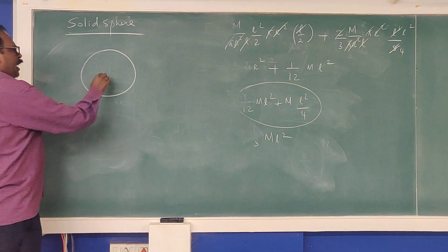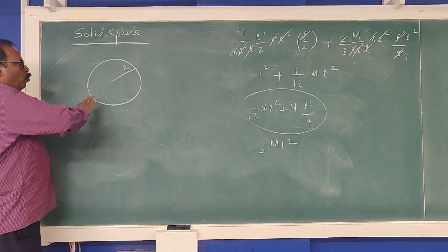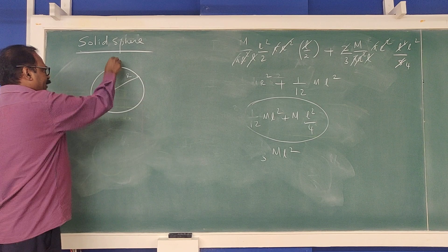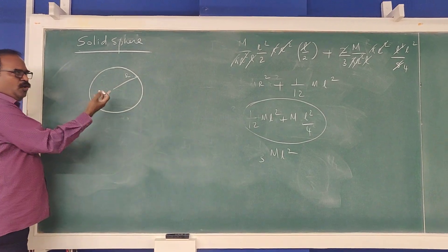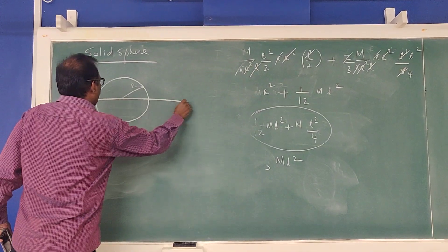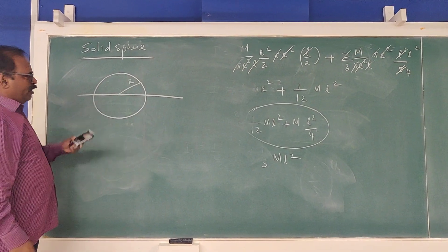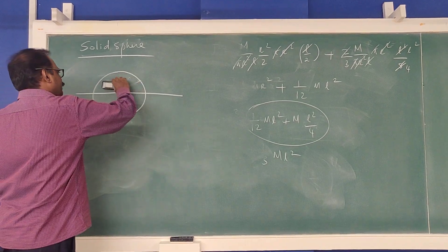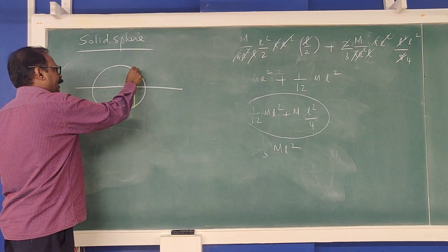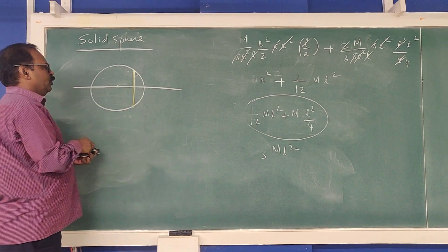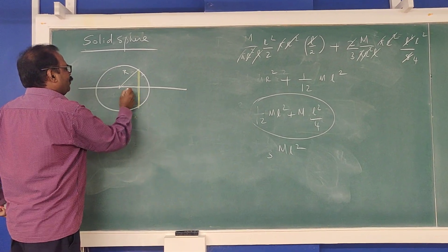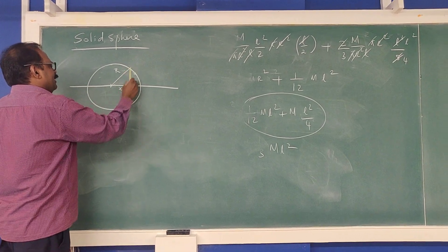Now consider a solid sphere of radius R. We want to find the moment of inertia about any diameter, say the x-axis. We take one thin disk element perpendicular to the x-axis. At position x along the x-axis, the radius of the disk is r, and this forms a right-angle triangle with the sphere's radius R.